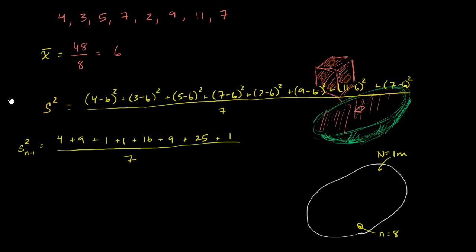Now let's see if we can add this up in our heads. 4 plus 9 is 13, plus 1 is 14, 15, 31, 40, 65, 66. So this is going to be equal to 66 over 7.